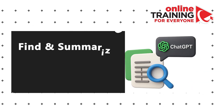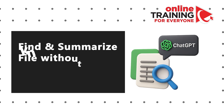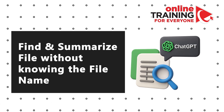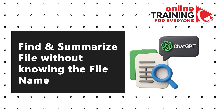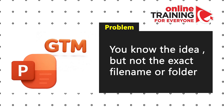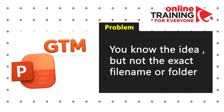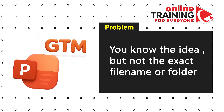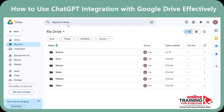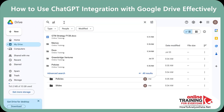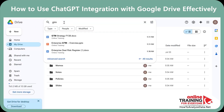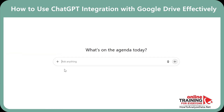Here's a typical problem you might face with Google Drive: finding a file without knowing the file name. You have an idea — it's something related to GTM — but you're not sure about the exact file name or folder. Obviously, you can search for it in Google Drive by typing GTM, but then you have to browse through all the files and folders to find what you're looking for. Here's where ChatGPT comes in.